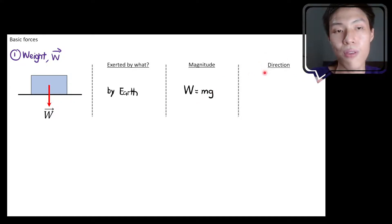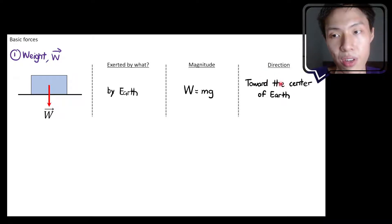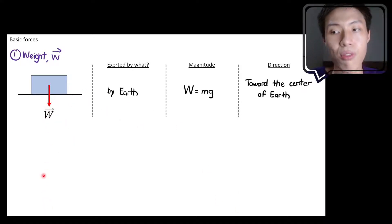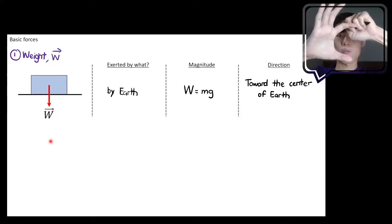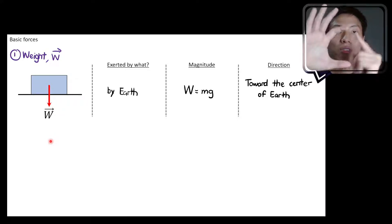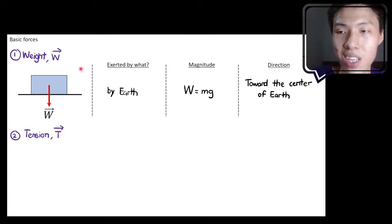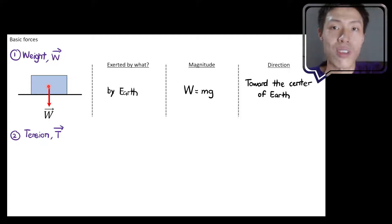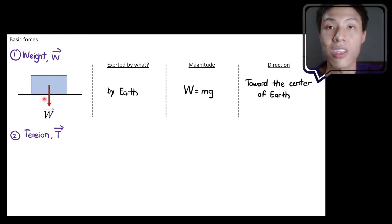The direction of weight should always point towards the center of the Earth. If you imagine a big circle representing the Earth, the center is right below the object. So as long as an object is near Earth, weight is pointing downwards — that is how Earth is pulling you. Earth is never pushing you outwards. Therefore, weight is always going downwards as long as you are near the surface of Earth.